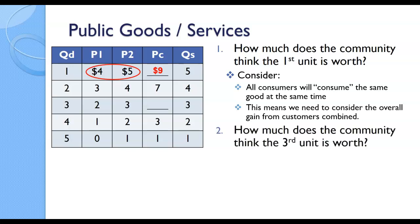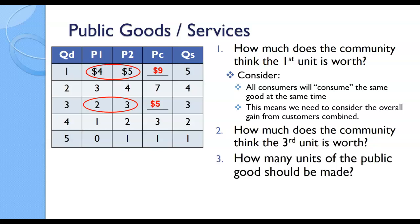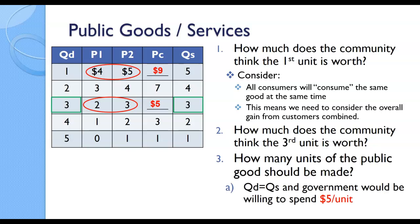How about the third unit? They would think that the third unit is worth a combination of $5. So the first unit they think is worth $9, then $7, then $5, and so forth. How many units should be made? We're still talking about quantity demanded and quantity supplied. At the third unit, quantity demanded and quantity supplied are equal to each other, so they're going to buy that. How much does the government spend on those three public parks? $5, because that's the benefit the community is going to receive. Each one should be a $5 value — as long as the cost is at or below that, the government should produce that good.